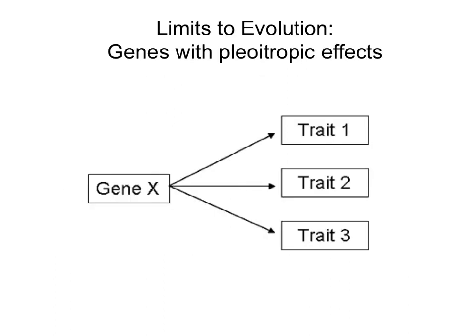So let's look at the example of a pleiotropic gene — one that is responsible for multiple traits. Some of those traits are beneficial and natural selection will increase the expression of that trait. But if another trait is detrimental, it will be very difficult to separate them because they are both produced by the same gene. Increasing this gene will increase the favorable effect but also increase the damaging effect, while decreasing this gene will decrease both the favorable and the damaging effect.